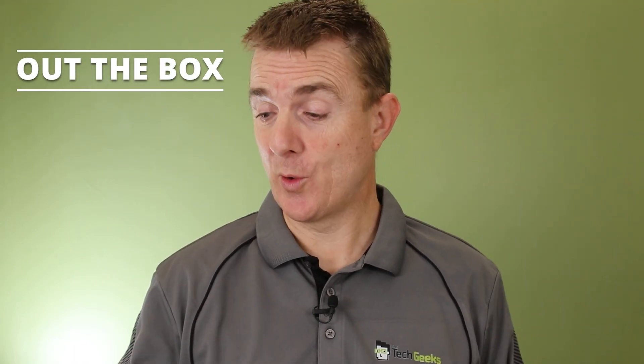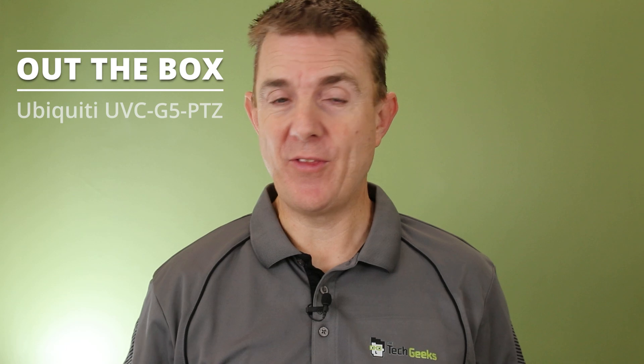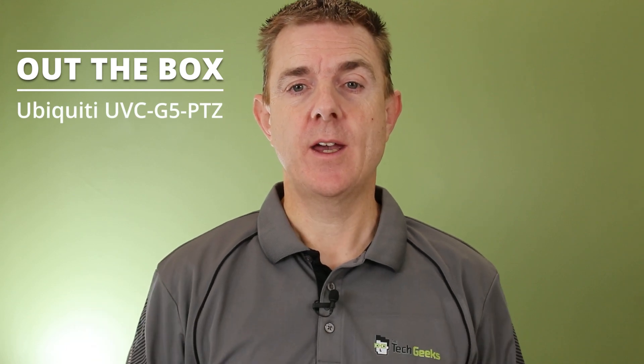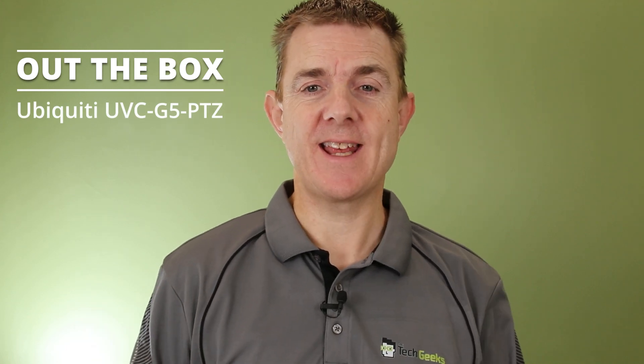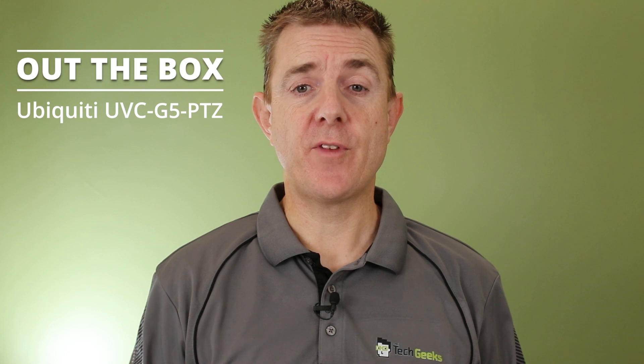Hi and welcome to this edition of Out the Box. My name is Paul. Today we're going to have a look at what is in this box. This is the Ubiquiti UVC G5 PTZ, the G5 pan tilt and zoom. This is a 2K camera that supports two times optical zoom.